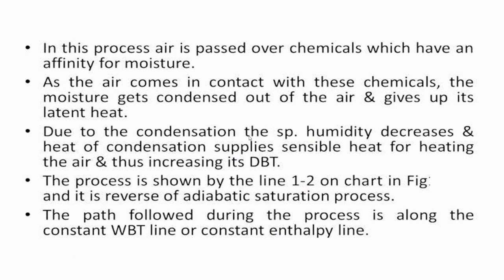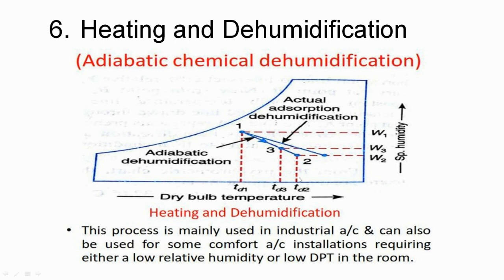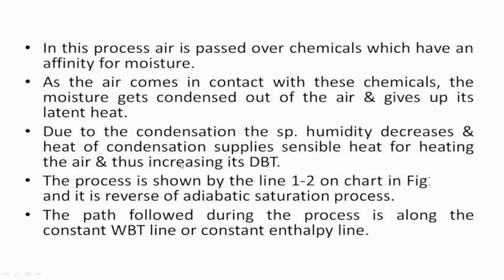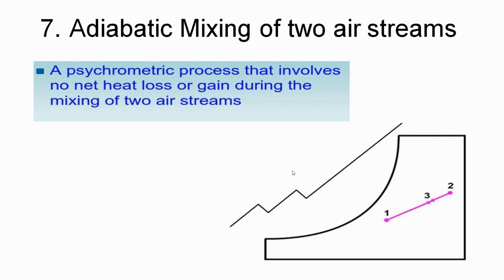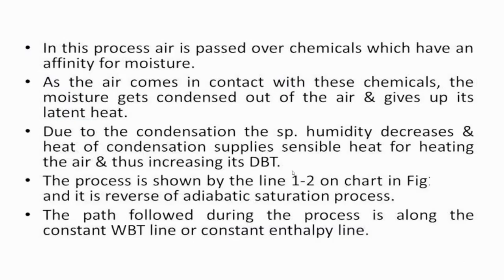The reverse of heating and dehumidification is the adiabatic saturation process. The path followed during heating and dehumidification is along the constant wet bulb temperature (WBT) line or constant enthalpy line. From point one to three, the wet bulb temperature remains constant throughout the process, while specific humidity and dry bulb temperature are changing. That is all for today; in the next lecture we will see the mixing of air streams.